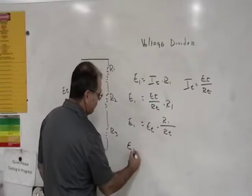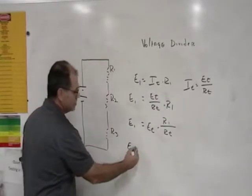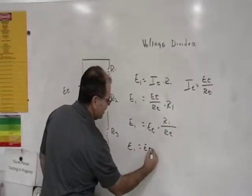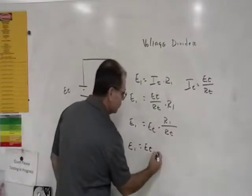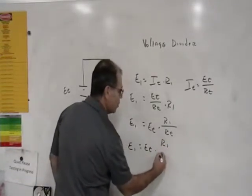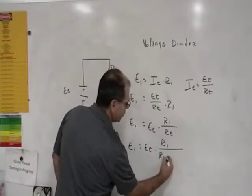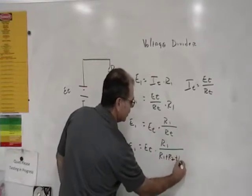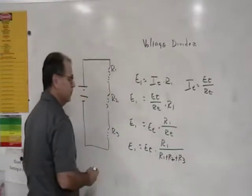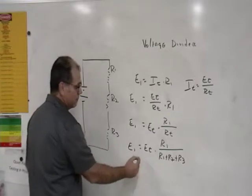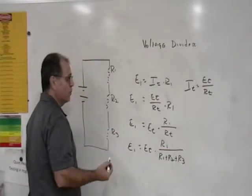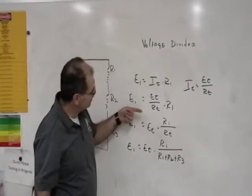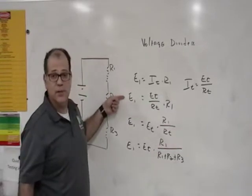And if you wanted to expand this even further, we have three resistors. You can say that E1 is equal to the total voltage times R1 divided by R1 plus R2 plus R3. And again, this equation here is the law of proportionality just as much as this equation up here is.